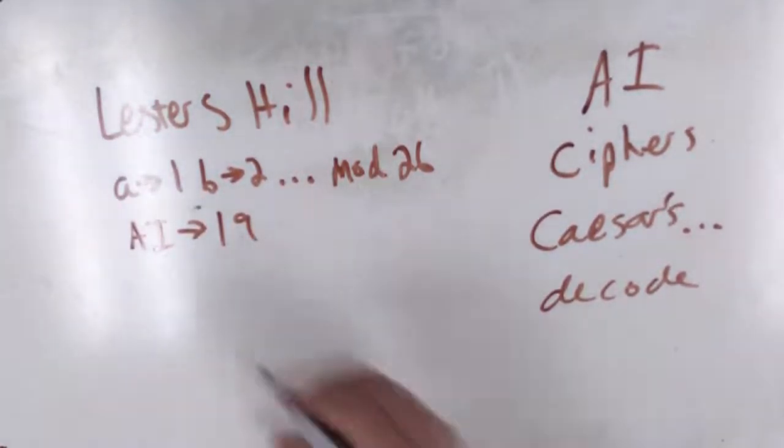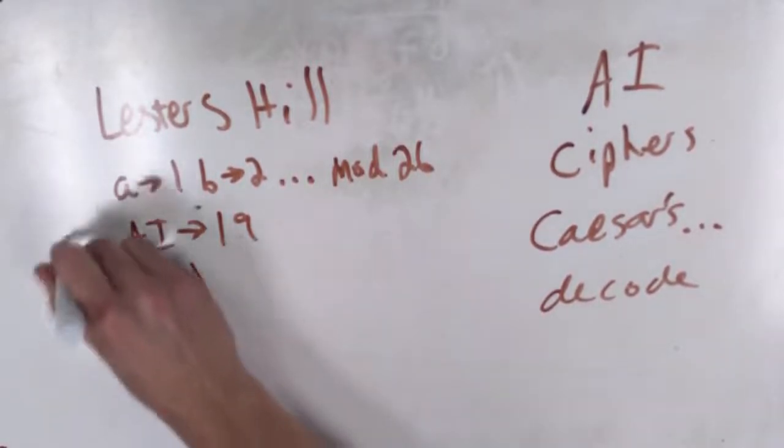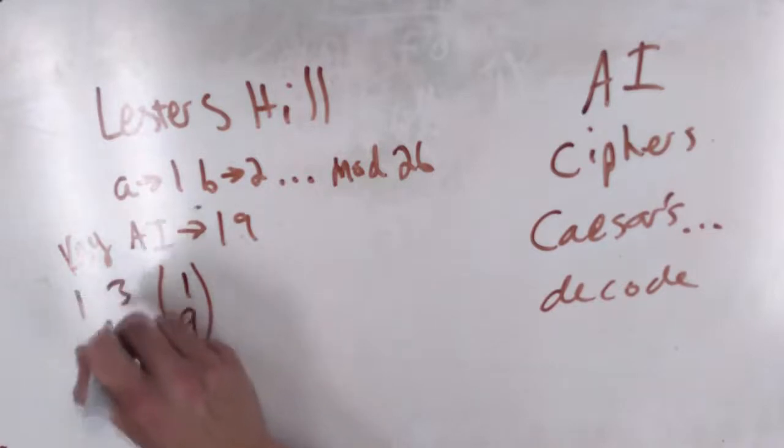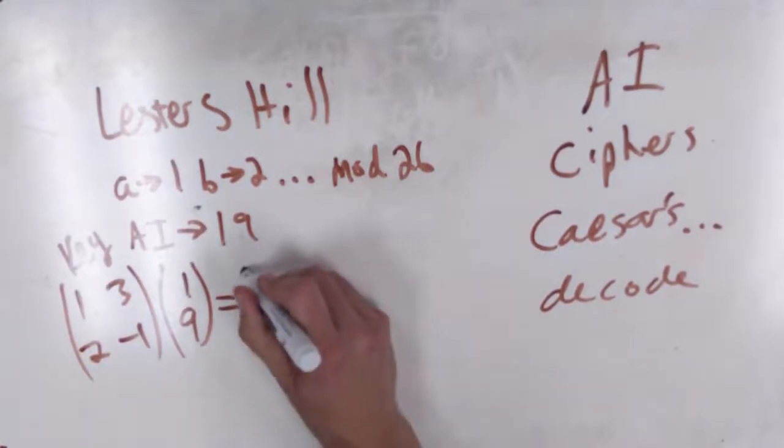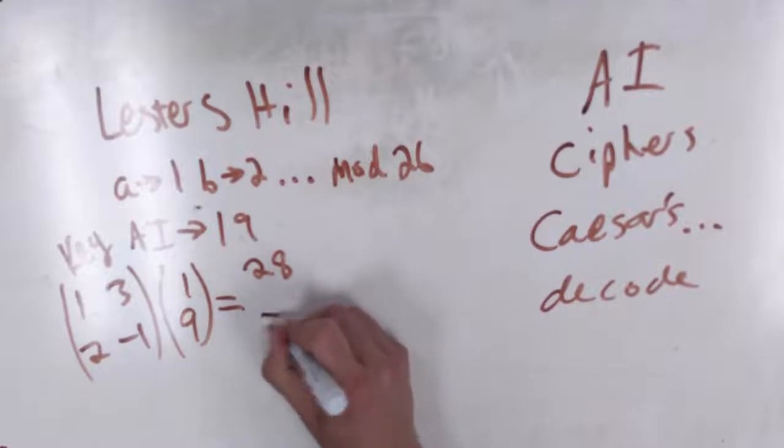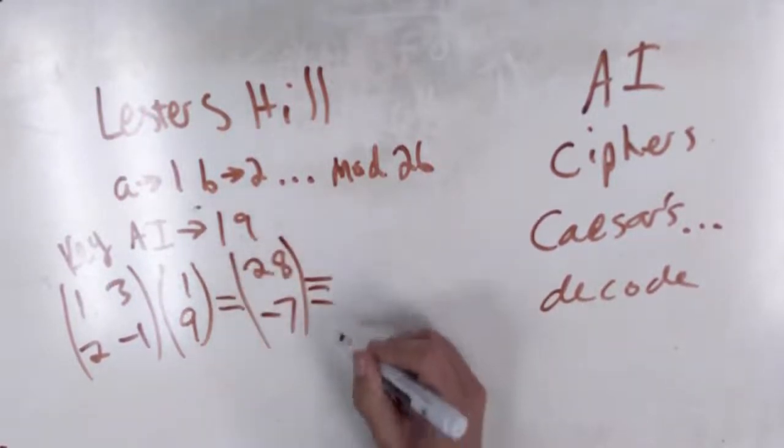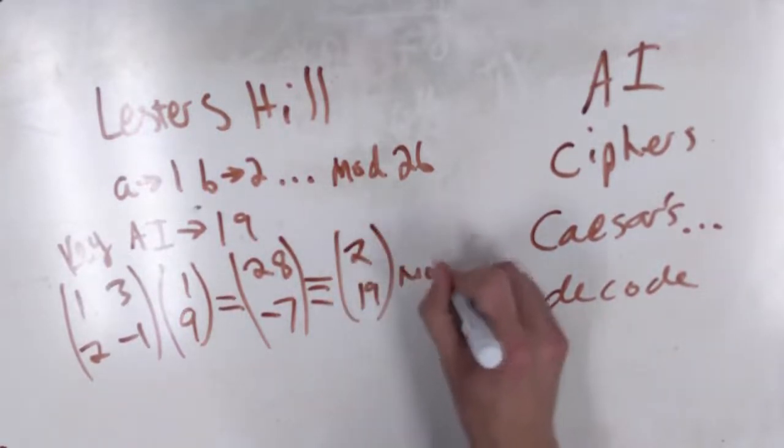And to encrypt the message, we convert it into a vector and multiply it by a key matrix. So this could be any matrix predetermined by the sender and the receiver, such as 1, 3, 2, and negative 1. To encrypt the message, you multiply the message by the key matrix. And this will, in our case, give us 28 and negative 7. Remember, this is mod 26. So this is equivalent to 2 and 19, mod 26.